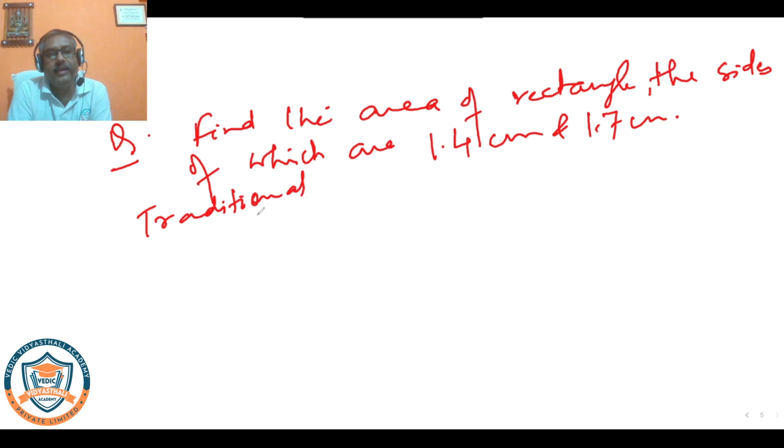Area of rectangle is length into breadth. Here length and breadth are 1.4 and 1.7, so we'll ignore decimal for the time being. 14 times 7 is 98, and we put a 0, and 14 times 1 is 14.